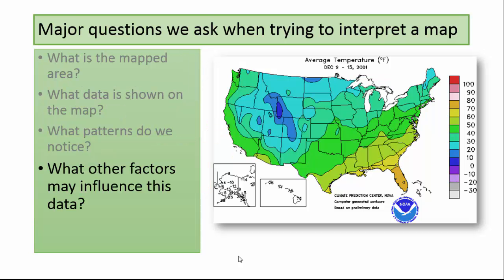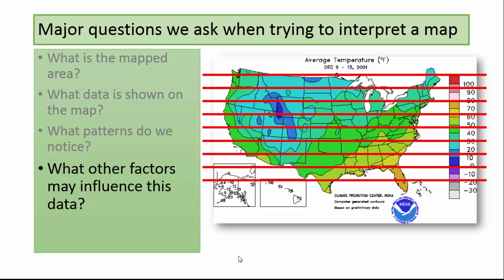Next, let's ask some questions that will help us interpret the map. Let's consider what other factors may influence this data. First, let's observe what we do not see in this data. Recall that we have talked about the importance of incoming solar energy, or insolation, in driving all exogenic systems on Earth. We know that sun energy hits the Earth along lines of latitude. The temperature patterns most definitely do not align with latitude, so there must be something else going on beyond just the incoming solar energy received.